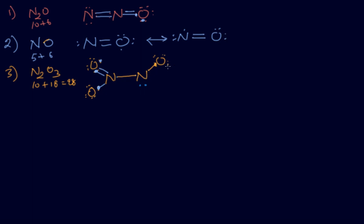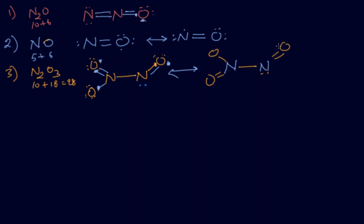Take one lone pair and make a bond to complete the structure. Then you can show its resonance — two, two, four, four, six, eight, one pair, one bond. Show the resonance by exchanging the double bond position: the double bond moves, giving one bond here as a double bond, then a single bond, with lone pairs shown. This gives us the complete structure of dinitrogen trioxide, N2O3.